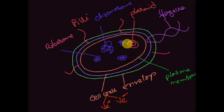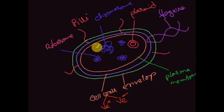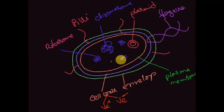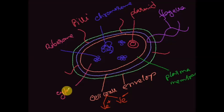All of these components are held together by a special type of organelle called bacterial cytoplasm. It's a semi-solid, jelly-like structure that holds all the small organelles inside the cell. So that's all about the bacterial cell structures.